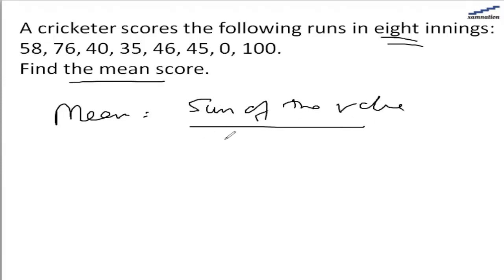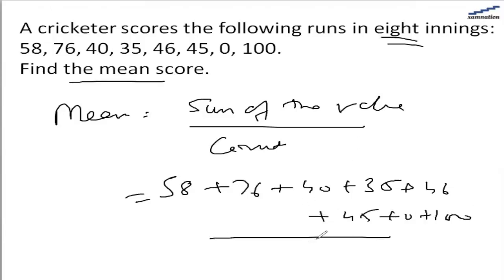Sum of the values is 58 plus 76 plus 40 plus 35 plus 46 plus 45 plus 0 plus 100, divided by total is 8 innings.